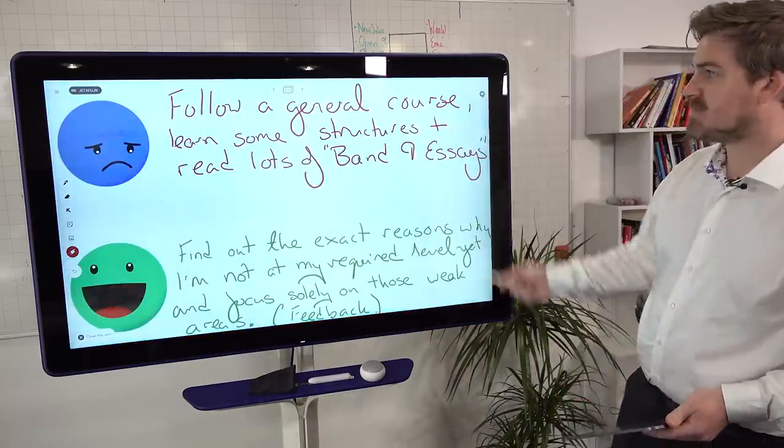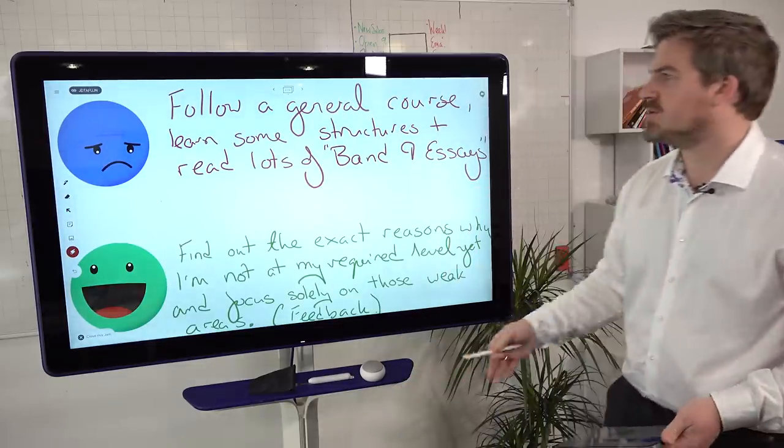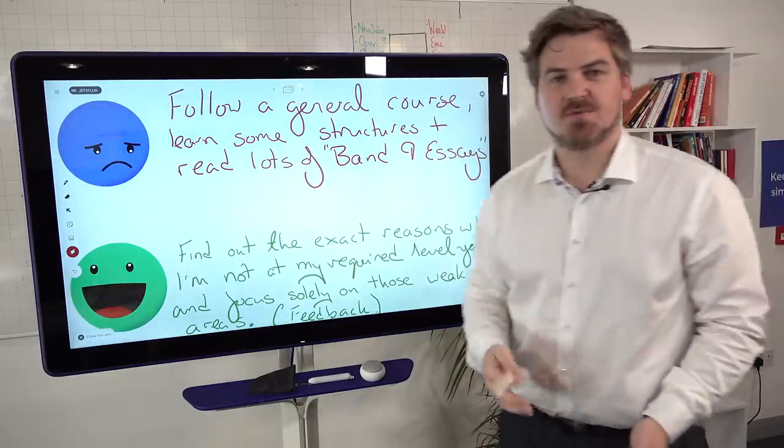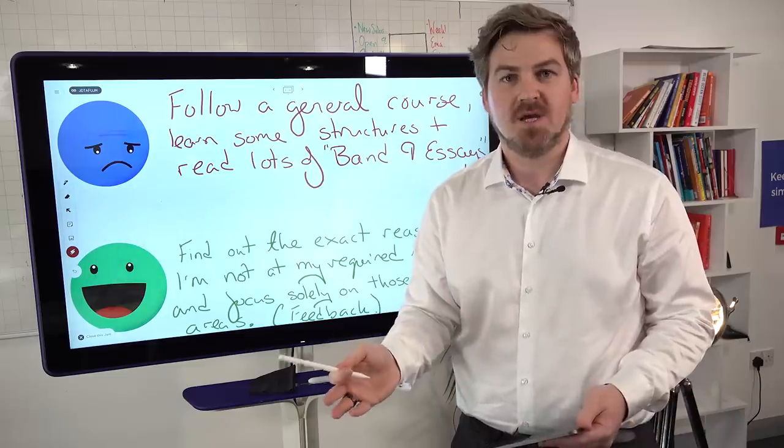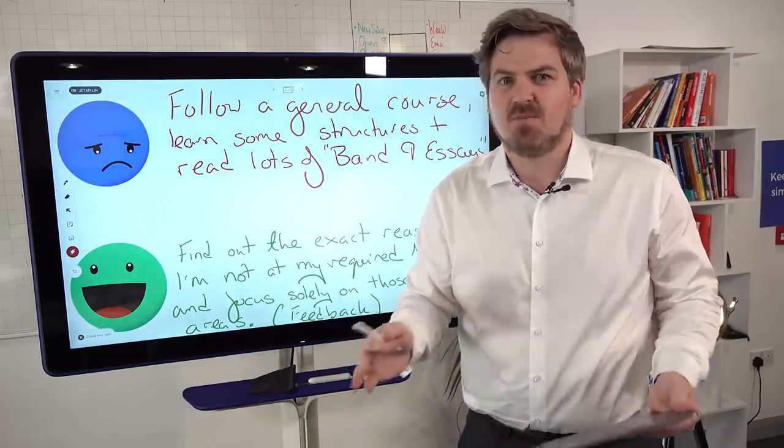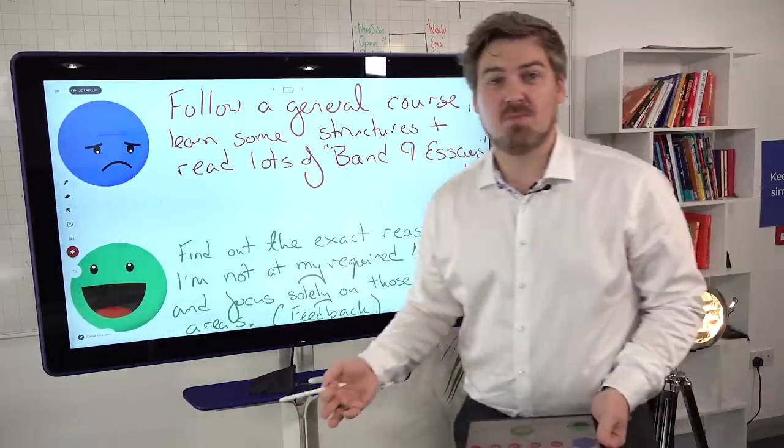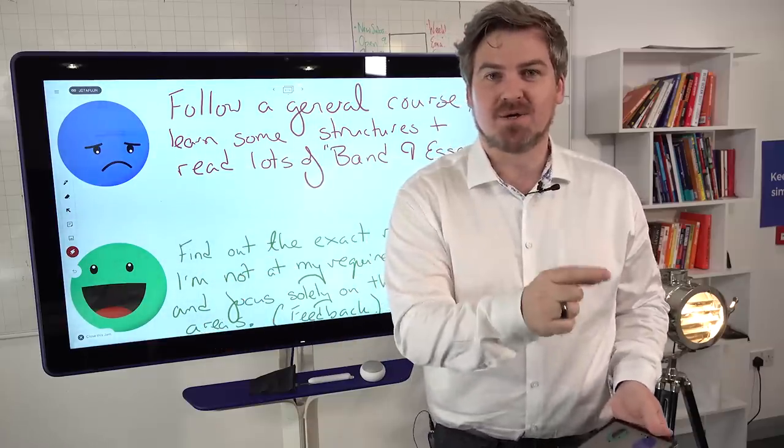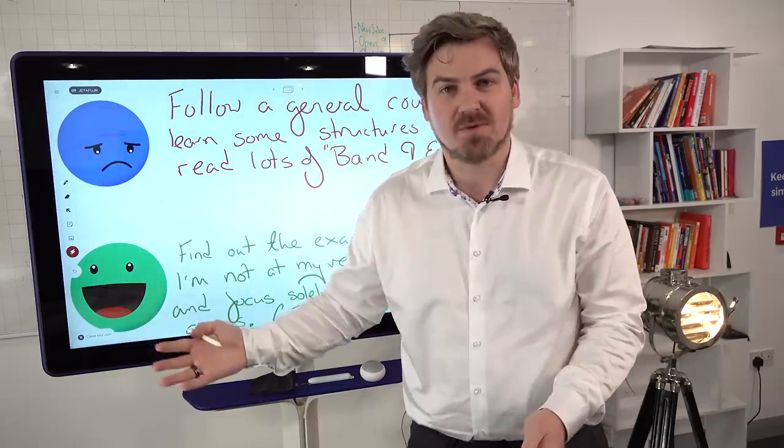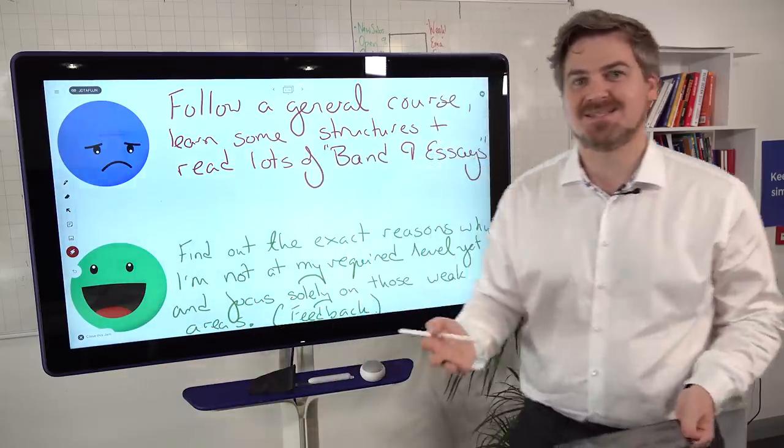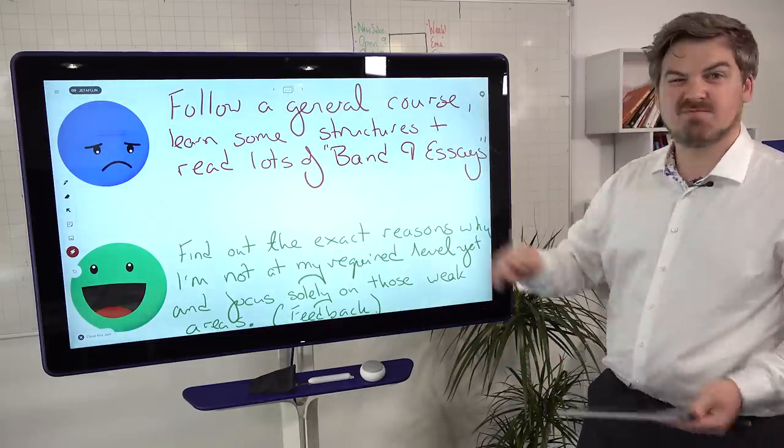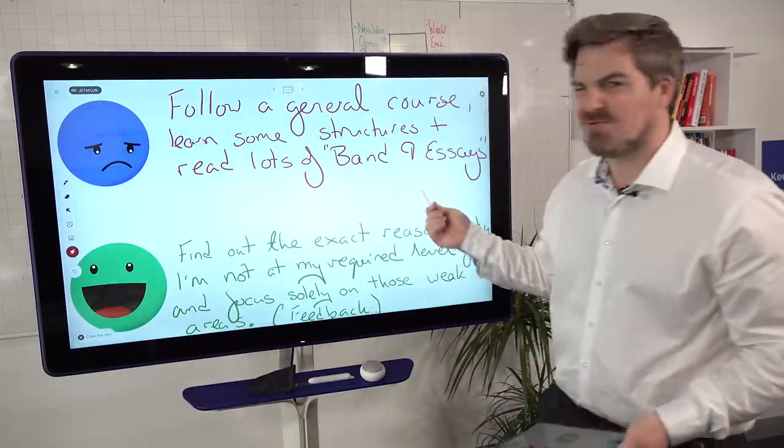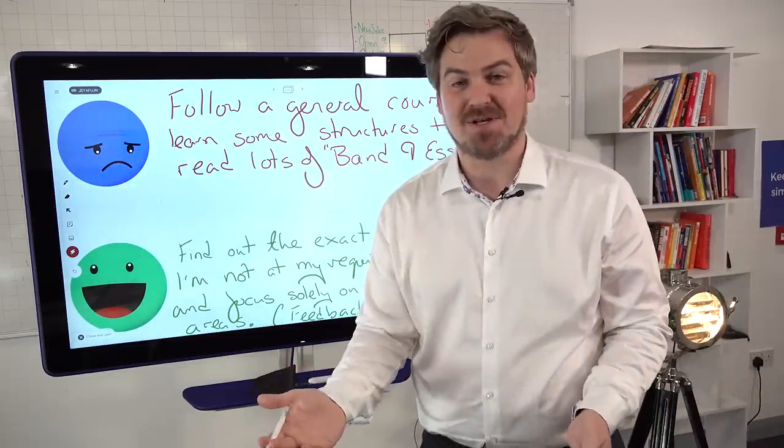And the second reason is the students who fail are the ones that do things like I'm going to follow a general course or I'm going to learn some structures or read lots of band nine essays. So why are you going to a general course when you are an individual? You have individual strengths and weaknesses. Why are you going to a course that is teaching you about listening and reading when you've no problems with listening and reading? Learn some structures. Structures are important. We teach our students structures, but they are a tiny percentage of your overall mark. And just relying on structures doesn't teach you anything about vocabulary, which is 25%, grammar, which is 25%, coherence and cohesion, task achievement. These things that actually matter. Or just reading lots of band nine essays. I can't watch Ronaldo and Messi play football and then become a better footballer. You can't read lots of band nine essays and then magically be able to write in the real test.